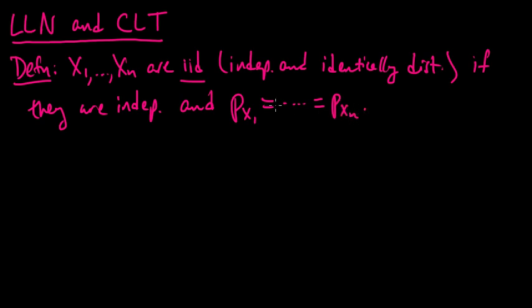All the marginals are the same — the marginals on each individual variable. And if they had a density instead of being discrete, then you would put f's here, and these would be the marginal densities. So that's iid.